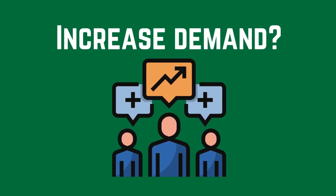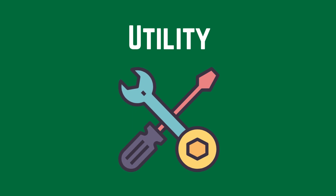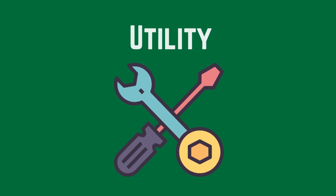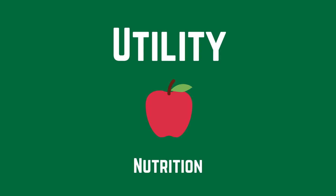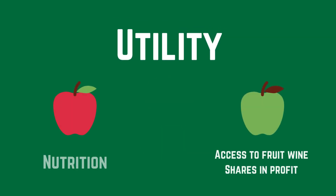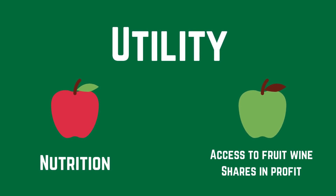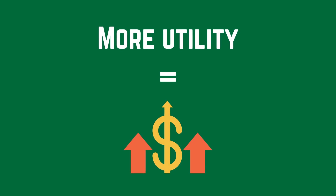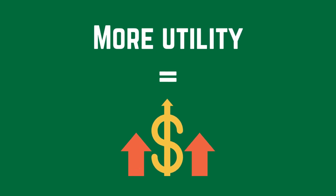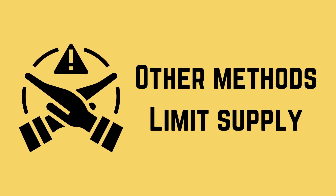An increase in supply can be offset if there's an equal increase in demand. So what can increase demand? That would be utility. In the case of an apple, the utility is limited — like eating and nutrition. But let's say a particular apple from a particular orchard allows you special access to a fruit wine or a share in the profits from the orchard. That apple has higher utility, and that additional utility can drive demand amongst buyers.